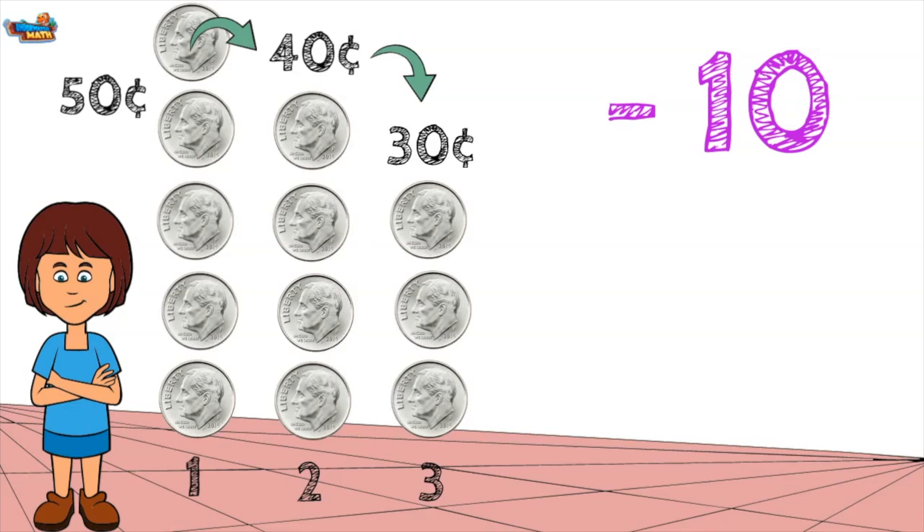Following the rule of the pattern, we should be able to determine the value of group 4's coins. We need to subtract 10 from group 3 for a total of 20 cents.